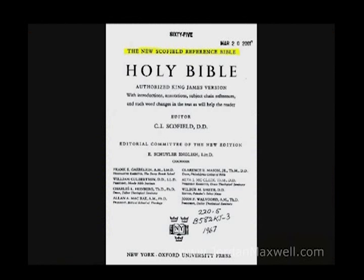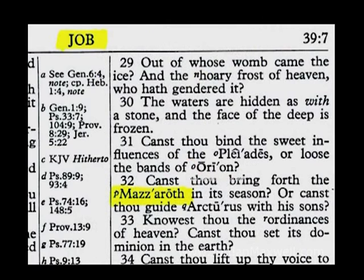What is Mazaroth and why is it in the Bible? Let's go back to the Bible — Job 38:32 — and in the middle there's a little red square, which is a footnote. God is asking Job, 'Can thou bring forth Mazaroth in its season?' And the footnote says Mazaroth is the signs of the Zodiac.